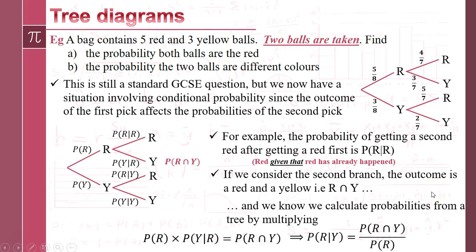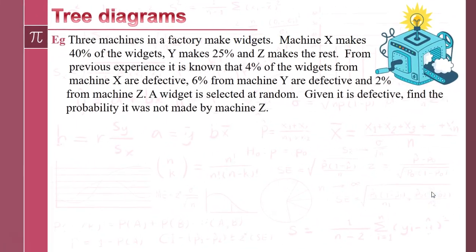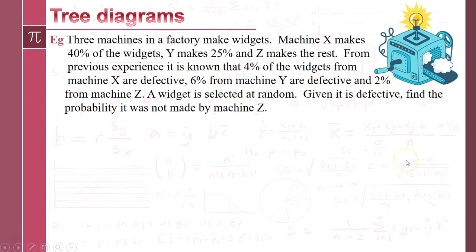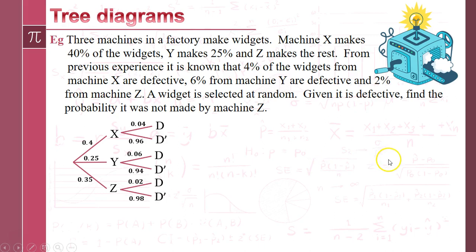Finally, let's look at how this appears in an exam-style question. We've got a factory with three machines. The machines make widgets with a different proportion being made on each machine, and there are different proportions that are defective coming out of each machine. Here is the tree diagram — if you need to pause and look at where all the numbers come from, please do. Essentially all we've done is take the information from the text and turned it into a diagram.